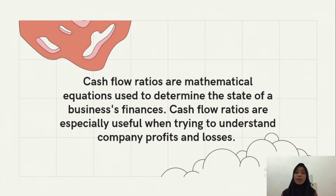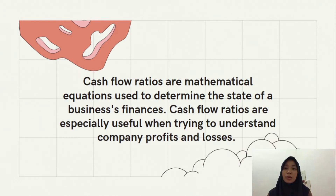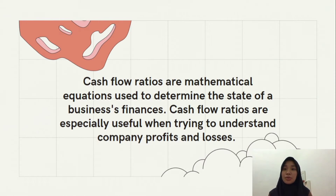The next material is about specialized cash flow ratios. Cash flow ratios are mathematical equations used to determine the state of a business's finances. Cash flow ratios are especially useful when trying to understand a company's profits and losses. Cash flow is the money continuously coming in and out of a business; the more cash flow a company has, the less susceptible it is to financial damage caused by a decrease in overall business.